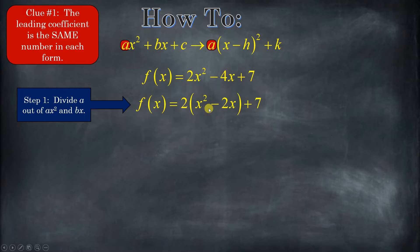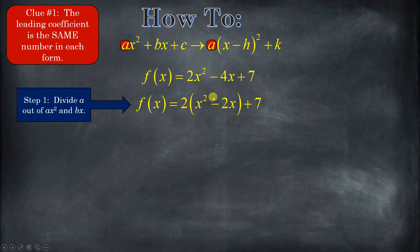What we're going to do first — and we'll do every little step separate — is we're going to divide 2 out of ax squared and out of bx. Even if this number doesn't divide out evenly, we're going to do it anyway, every single time. This is still the same value as before because if you distribute the 2, you get 2x squared and minus 4x and then plus 7. And the reason we do that is we keep a equal to 2.